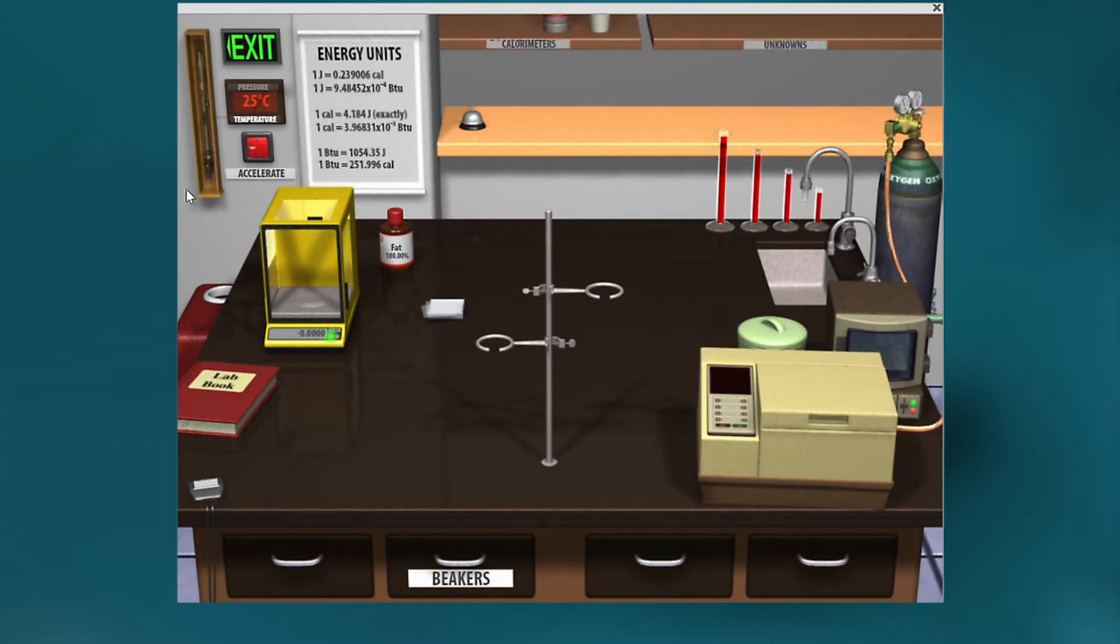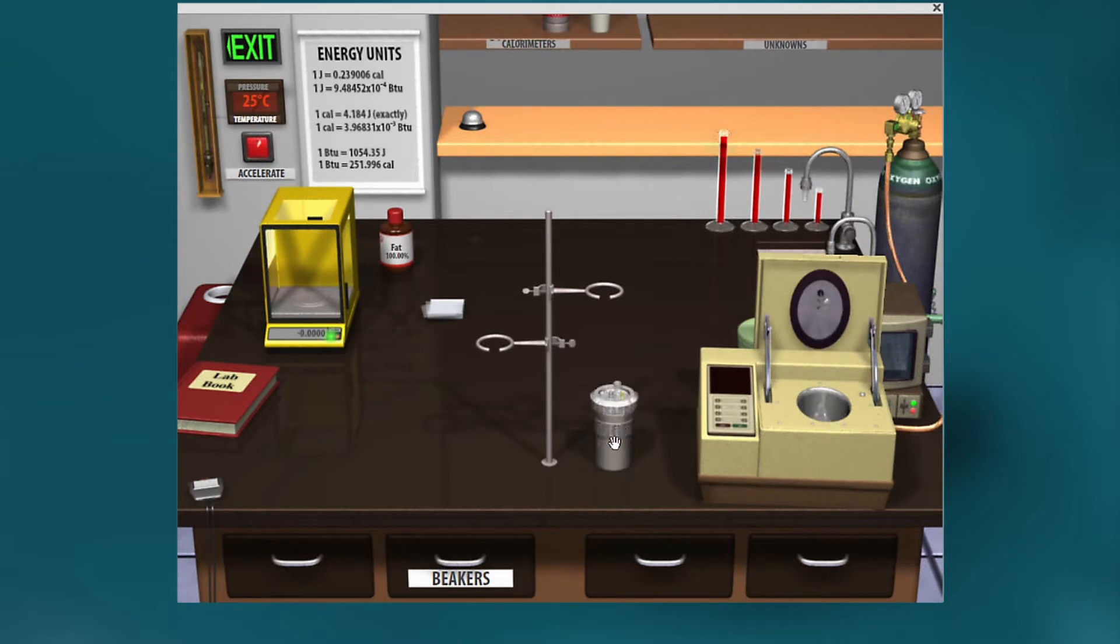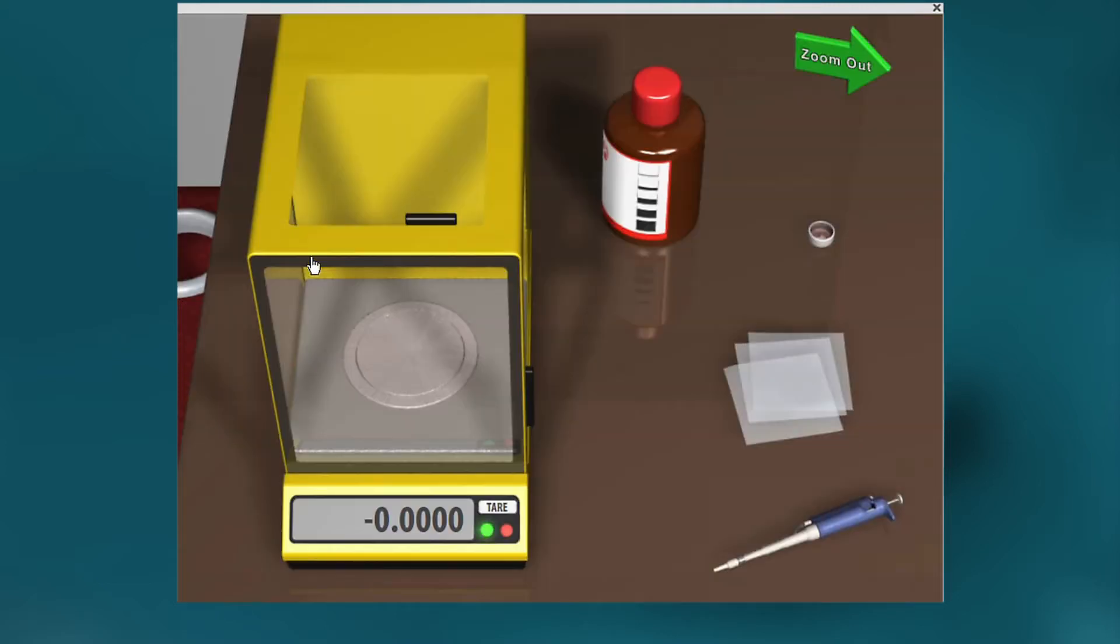So here we go. This is a calorimeter, it's called a bomb calorimeter. We'll take out the bomb and the dish that we're going to measure the fat into, we're going to take it over here to the scale, and we'll measure in about one gram of chicken fat.